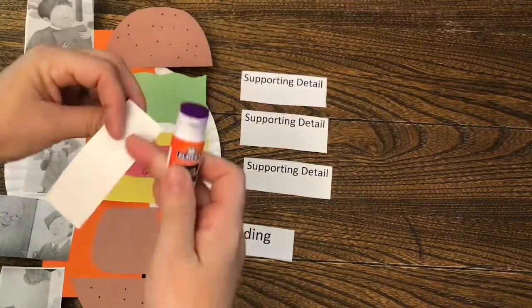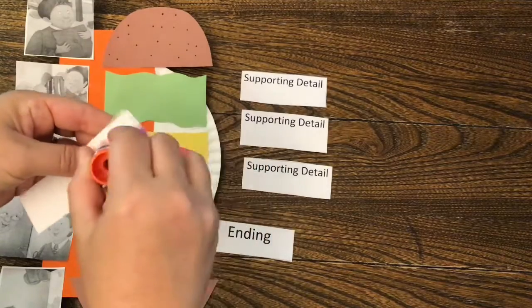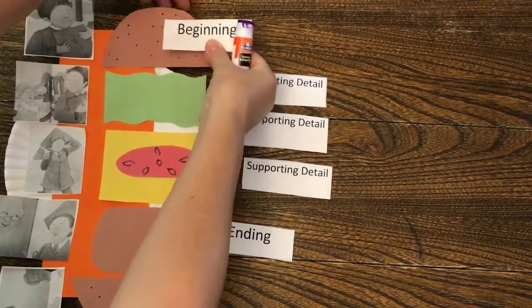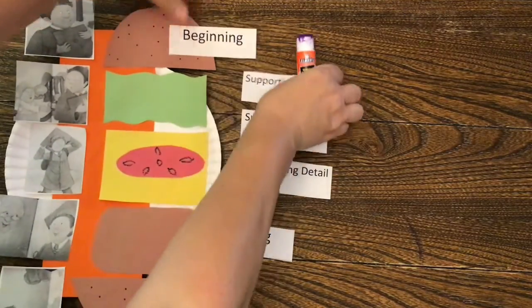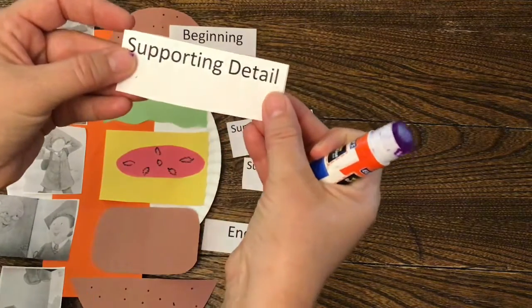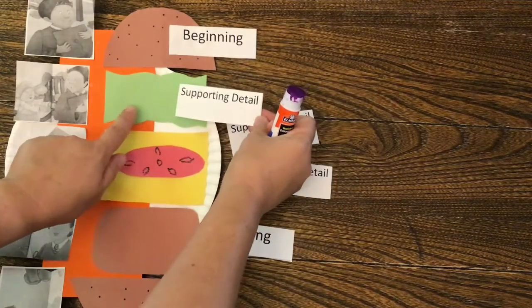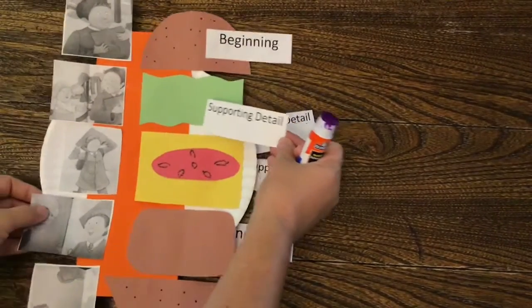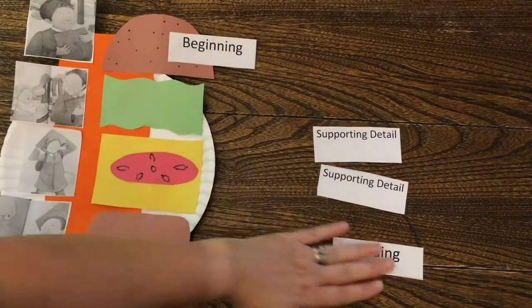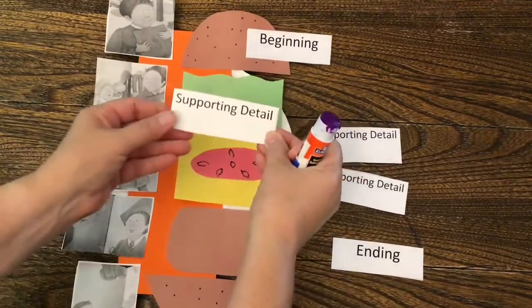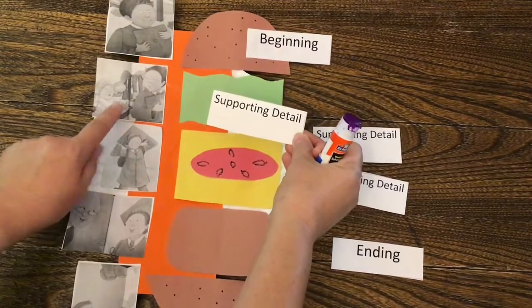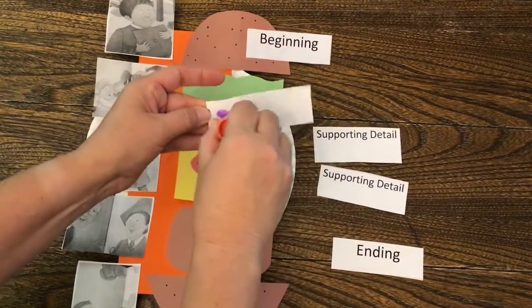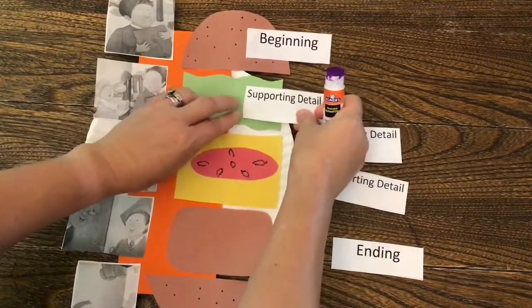Beginning. Beginning. He got dressed for his graduation. Supporting detail or lettuce. Let's scoot this over here a little bit. Supporting detail. His sister wanted to graduate too. She wanted a hat, so he had to give her those bunny ears.